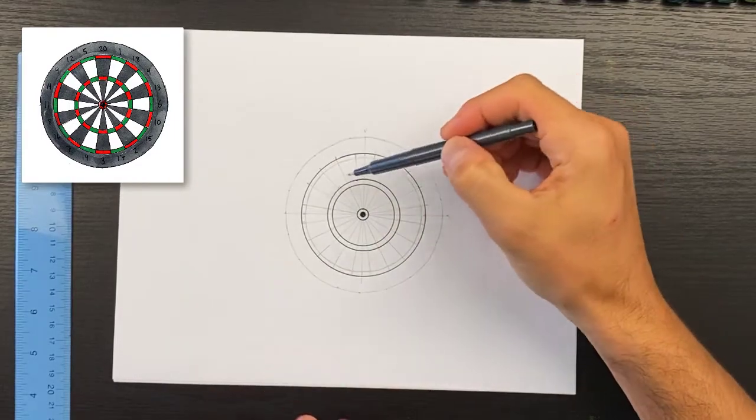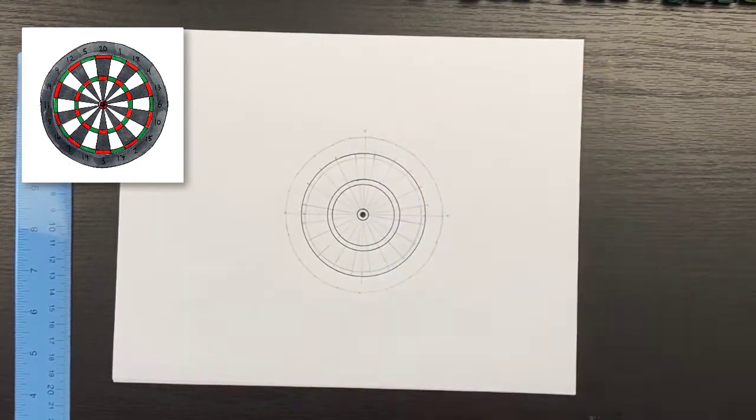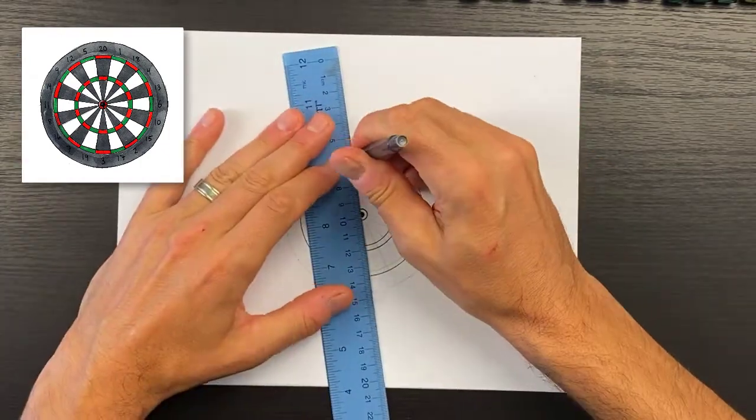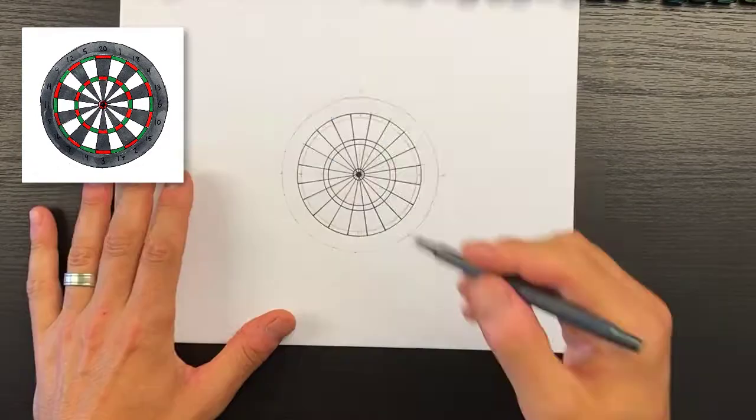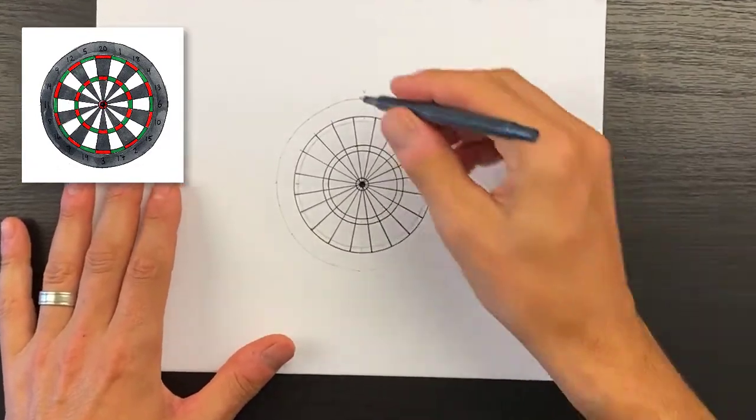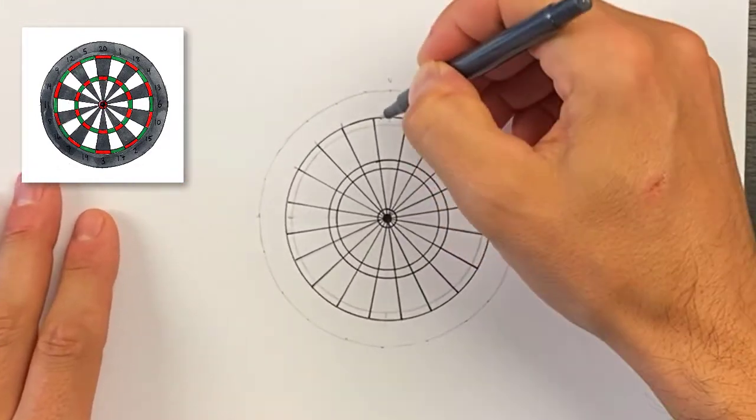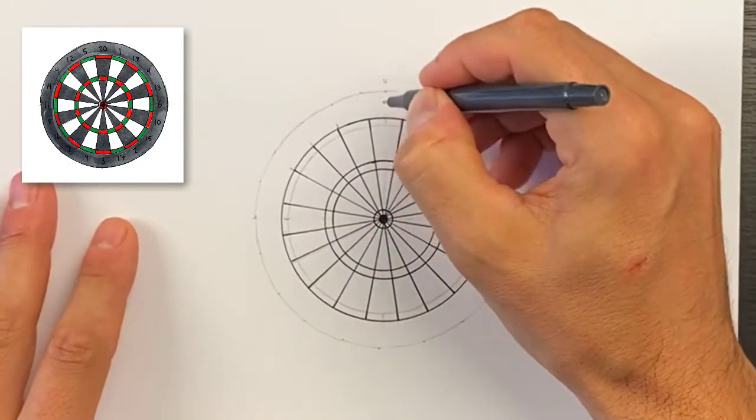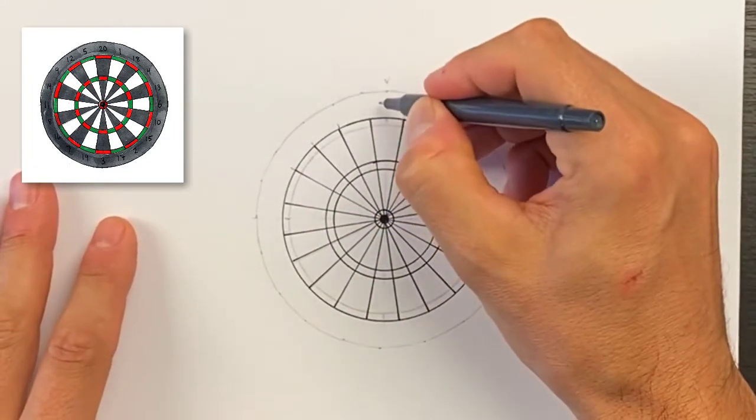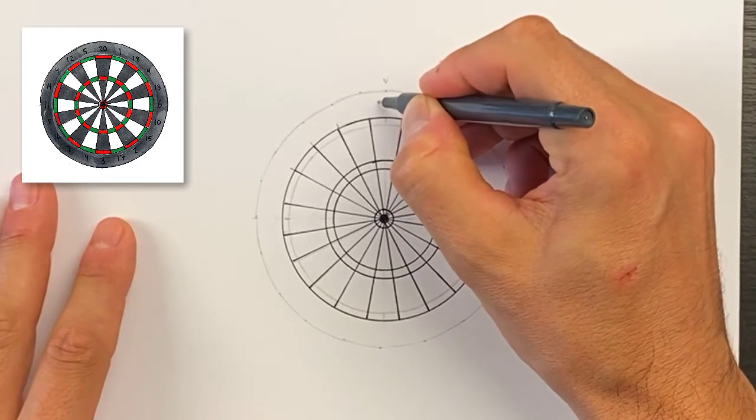Now we're going to start at the top, and the numbers don't go from 1 to 20 in order, so I'll show you where to place all the numbers. We'll start at the top and put the number 20 up there.